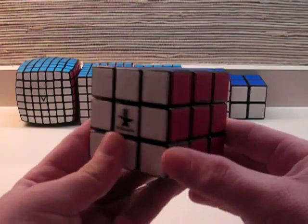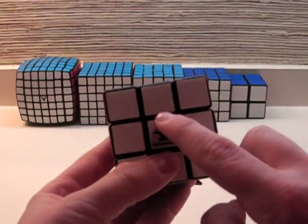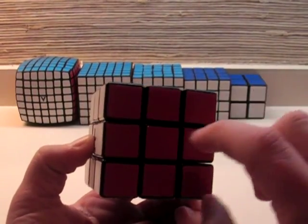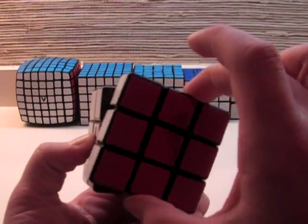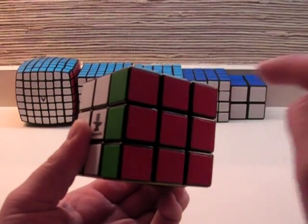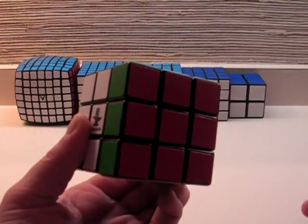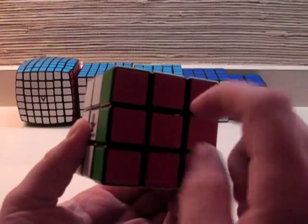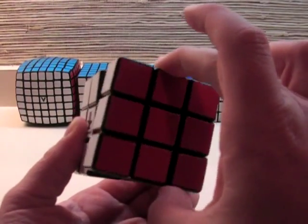So, just a normal R, this is still your front, I'm just turning it so you can see, is turning the right side clockwise. Now, an R prime, or an R with an apostrophe after it, as you can see down there, is turning the right side counterclockwise one turn.